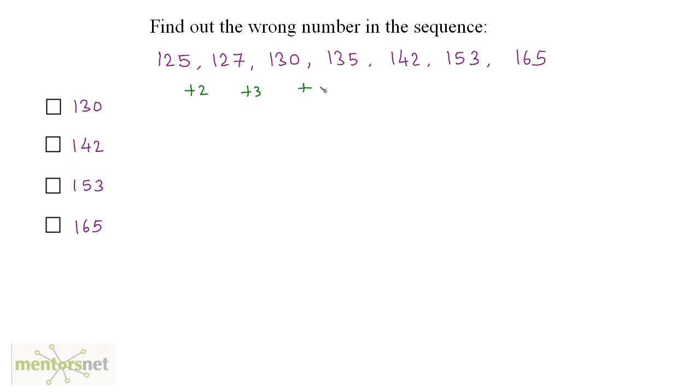And 130 plus 5 is 135. And 135 plus 7 is 142. Now, if you add 11 to 142, you get 153. And adding 12 to 153 will give you 165. So what's wrong here?